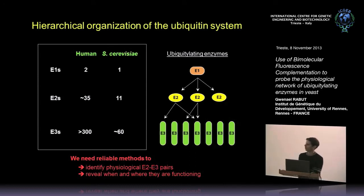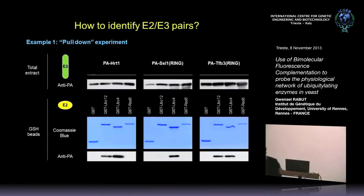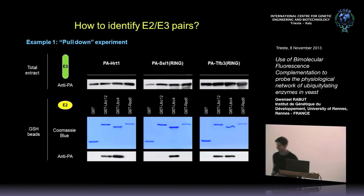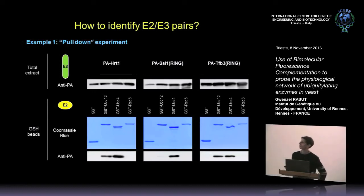We clearly need reliable methods to identify physiological E2-E3 pairs and to reveal when and where they function in the cell. When I was a postdoc at the ETH, I was already asking this kind of question, in a manner that I found quite unsatisfactory.